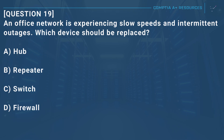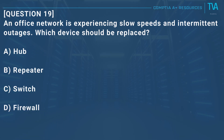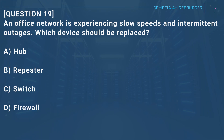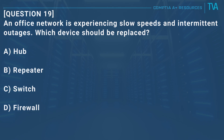Question 19: An office network is experiencing slow speeds and intermittent outages. Which device should be replaced? A, hub. B, repeater. C, switch. D, firewall.